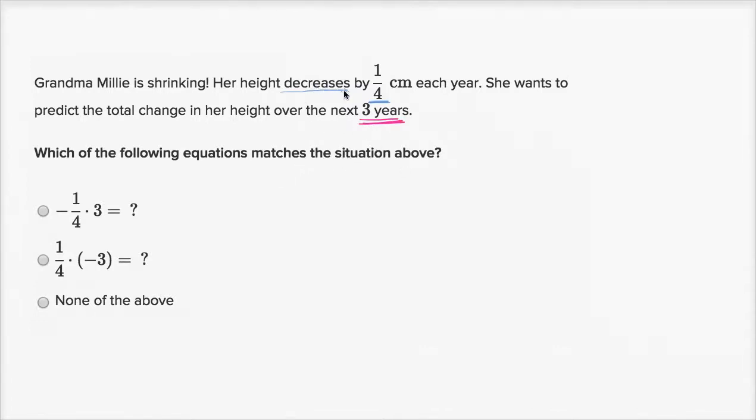So our height is decreasing. We could view that as the change in her height each year is a negative fourth of a centimeter, and that's going to happen for three years. So we would multiply negative one-fourth times three, which is exactly what's happening in this first choice right over here. Her height is decreasing by a quarter centimeter each year, and she's doing this for three years. So after three years, her change in height would be negative three-fourths of a centimeter, which means that she lost three-fourths of a centimeter.